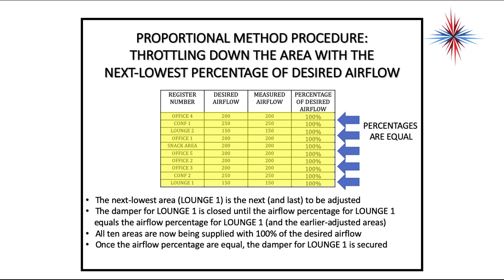Using the proportional method is much more accurate. However, if you weren't getting enough airflow from the blower to start with, you would not achieve 100% — it is critical to have sufficient airflow to match your desired values before beginning. Compared to the stepwise method's 10% tolerance, which can result in significant deviations between registers, the proportional method delivers equal percentages to all locations. This video is meant as an overview, not an exact how-to guide.